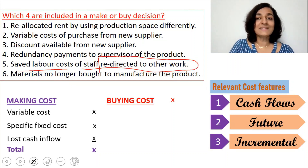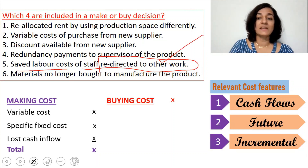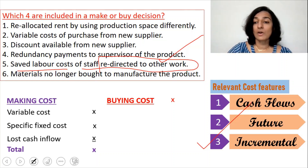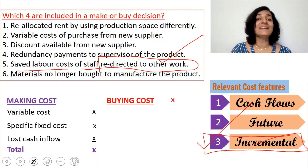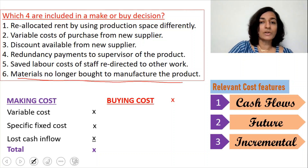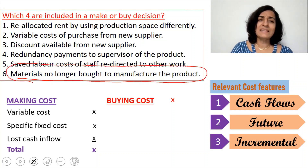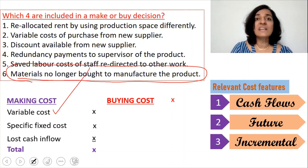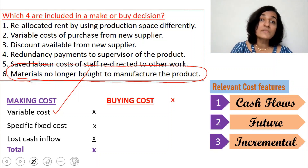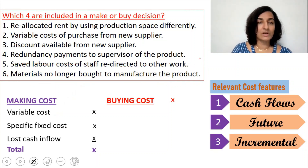Next: saved labor cost of staff redirected to other work. Whatever labor costs we pay now will still have to be paid for the other work — we are not gaining or losing anything. The basic feature of incremental or additional expense is not satisfied, so we do not include the saved labor cost. Then: materials no longer bought to manufacture the product. This refers to the purchase cost of materials, which falls under variable cost when making the product. So this will be included.